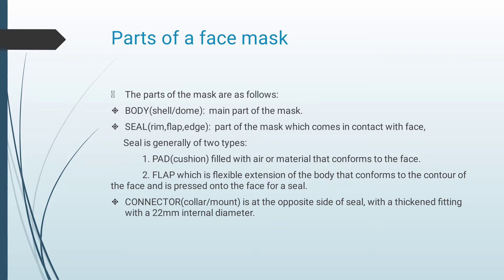Seal, called as rim, flap, or edge, is the part of the mask which comes in contact with the patient's face. Seal is generally of two types: pad or a cushion, which is filled with air or material which conforms to the face; and flap, which is a flexible extension of the body that conforms to the contour of the face and is pressed onto the face for a seal. Finally, connector or collar or mount is the opposite side of the seal with a thickened fitting with a 22mm internal diameter.